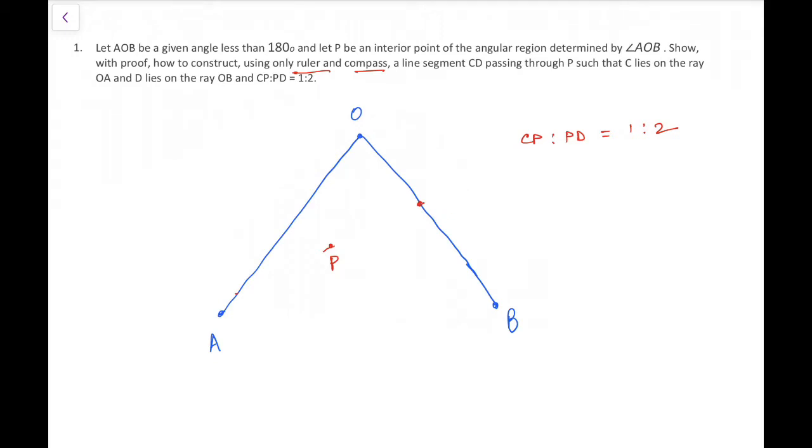This is a very simple problem. We start with the parallel line through P to OB, so a line that is parallel to OB through P. This point is T. So that's step one: draw a line parallel to OB through P.